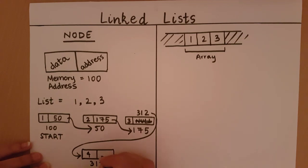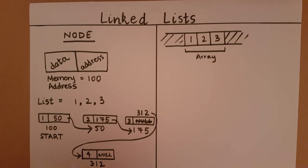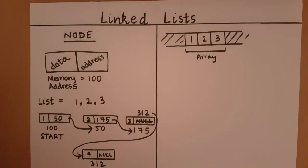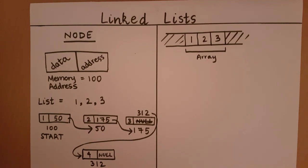Since there is no fifth node, the fourth node stores null in its address block. This is why a linked list is a good data structure when storing a collection of dynamic data — when we don't know how much data is coming in and we want to keep the size of our collection fluid.